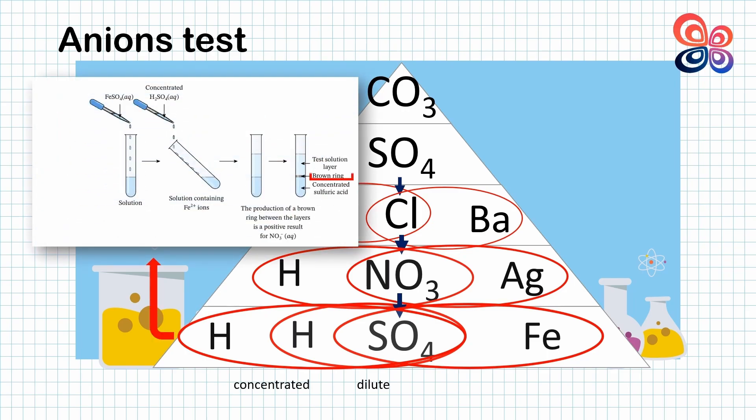The brown ring is produced. The concentrated sulfuric acid reacts with the nitrate ion to form nitrogen monoxide. The nitrogen monoxide combines with iron sulfate to form a brown complex which appears as a brown ring. This test is also called the brown ring test.